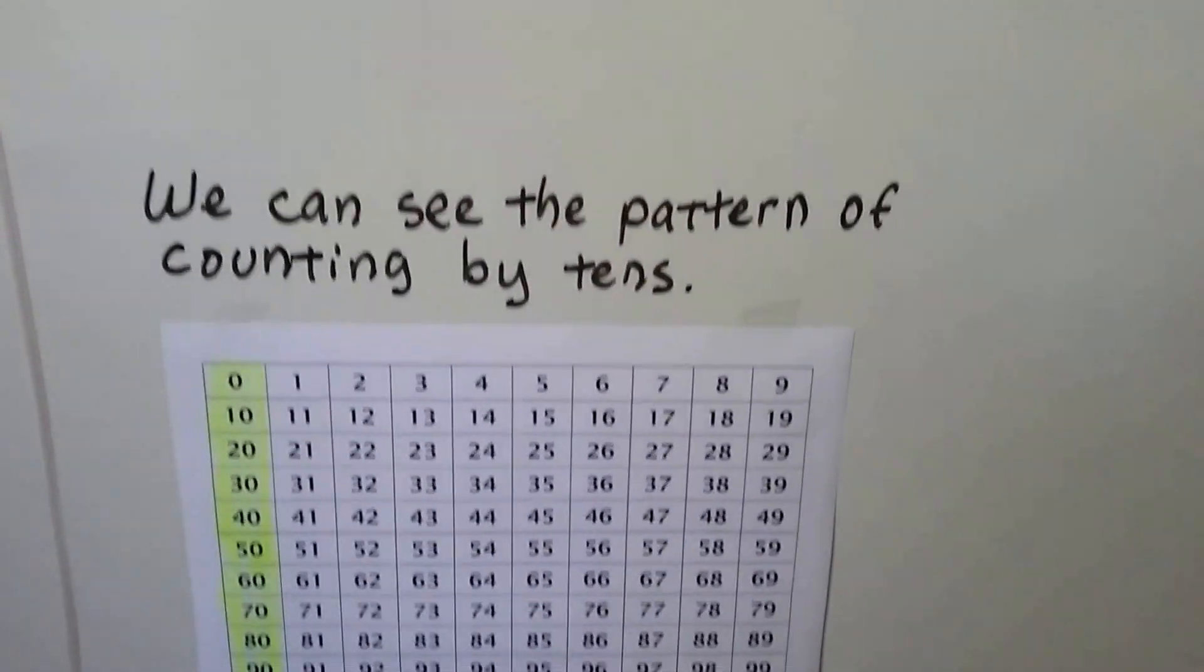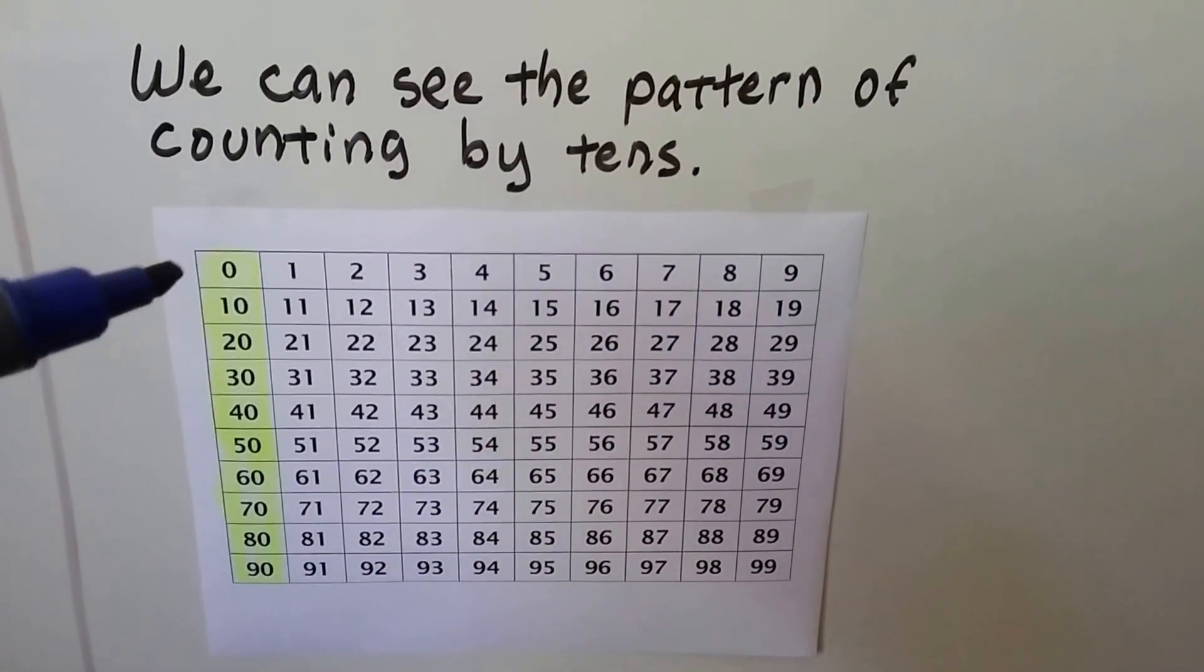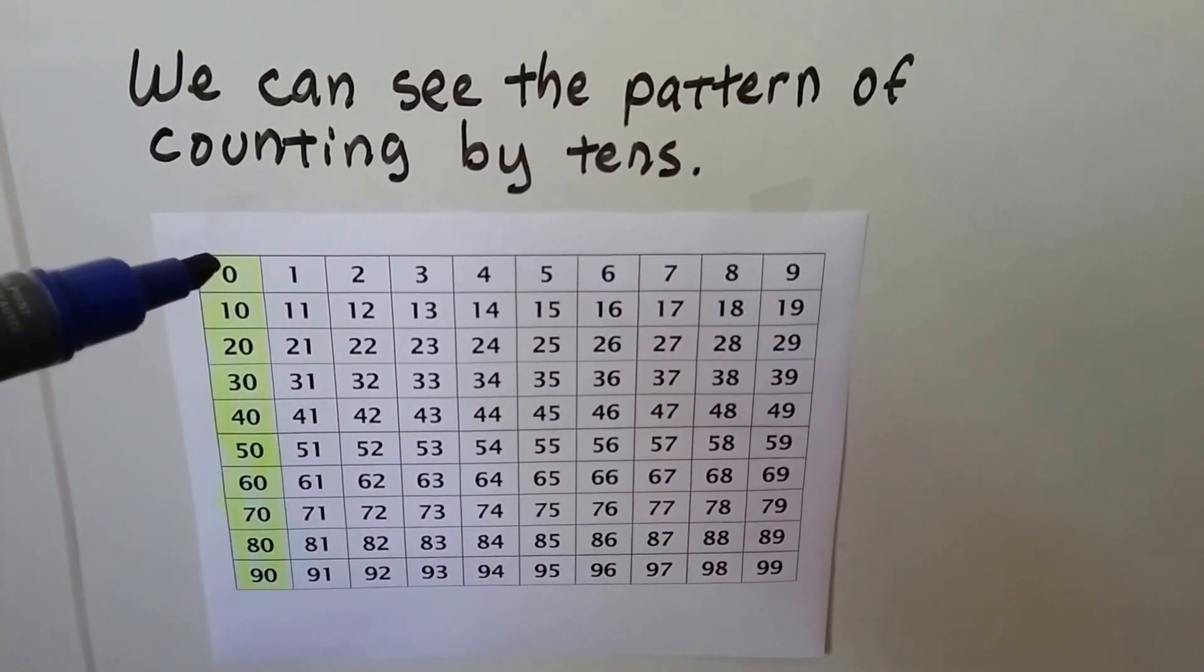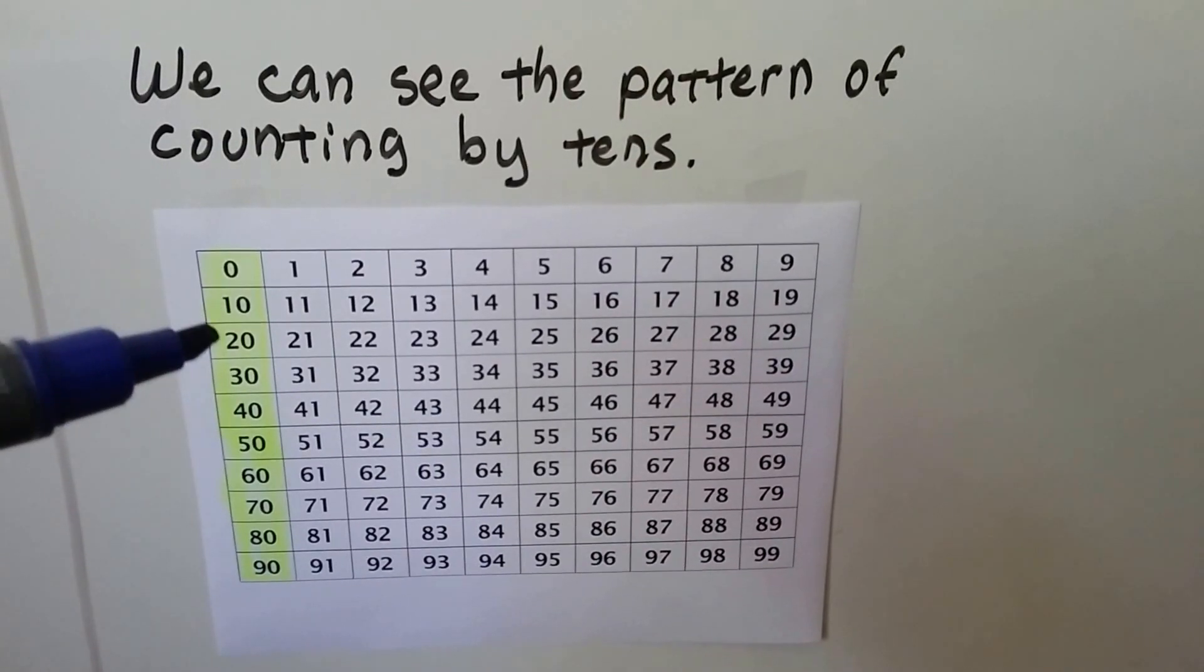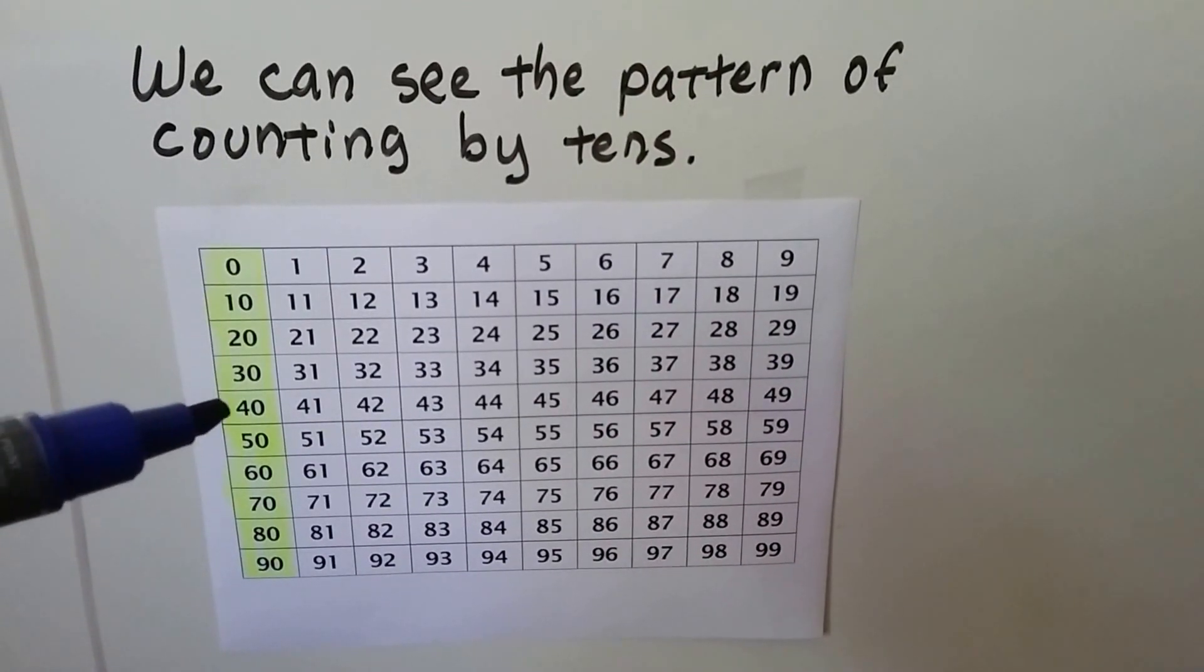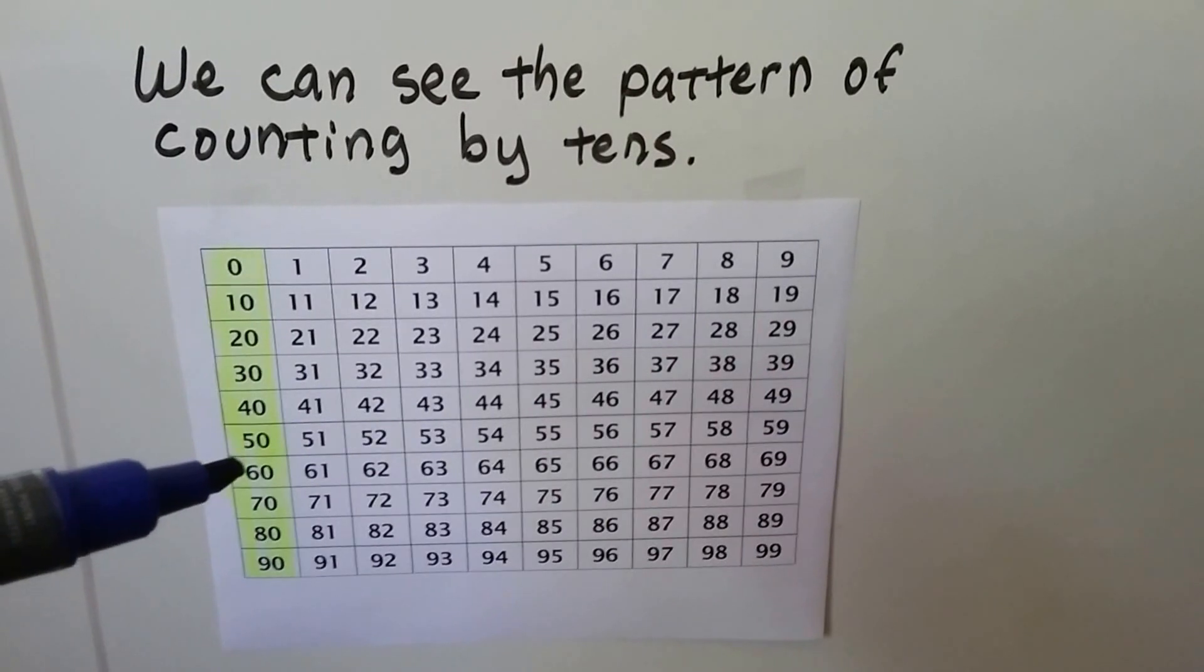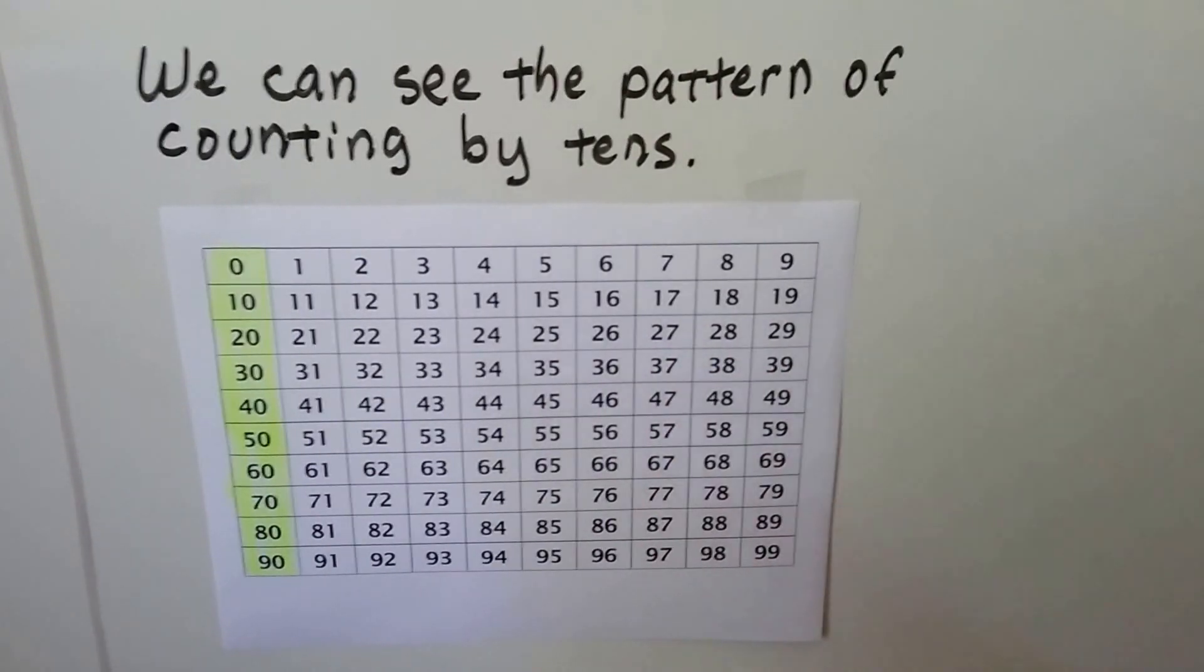We can see the pattern of counting by 10s. We're going to start with 0 on our chart. So underneath it we have 10, 20, 30, 40, 50, 60, 70, 80, 90.